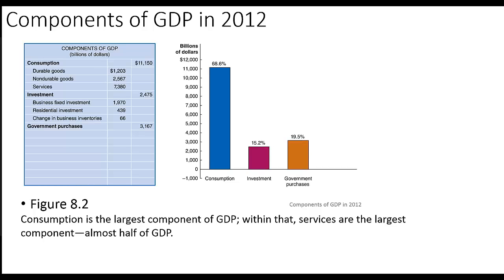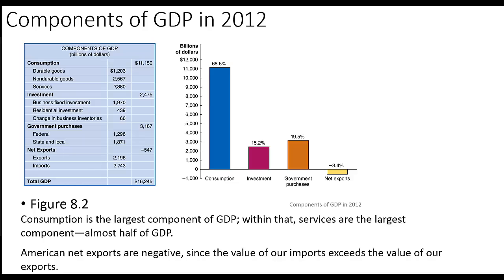Looking at some 2012 GDP component data, we can see that consumption is by far the largest component of GDP. Within consumption spending, spending on services is more than spending on durable and non-durable goods combined — in fact, roughly twice their combination. This reflects a modern trend of production shifting from goods to services, partly driven by the aging population, which increases demand for services like medical care and financial planning faster than demand for goods.